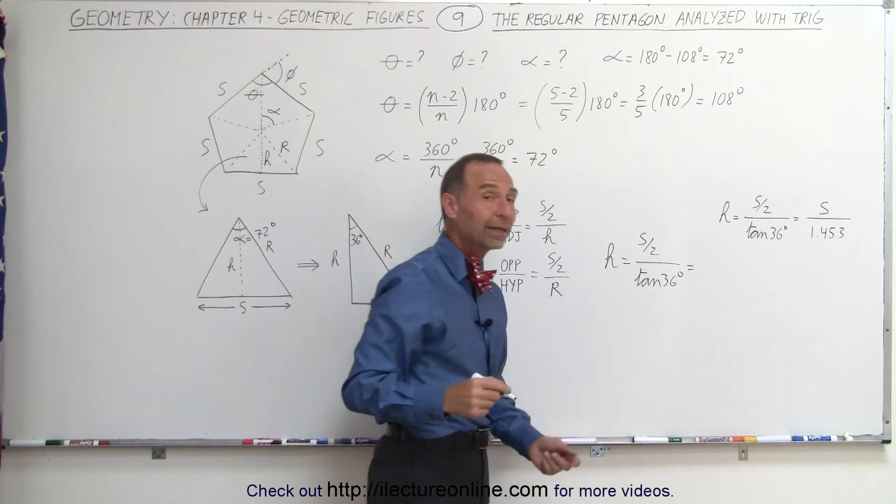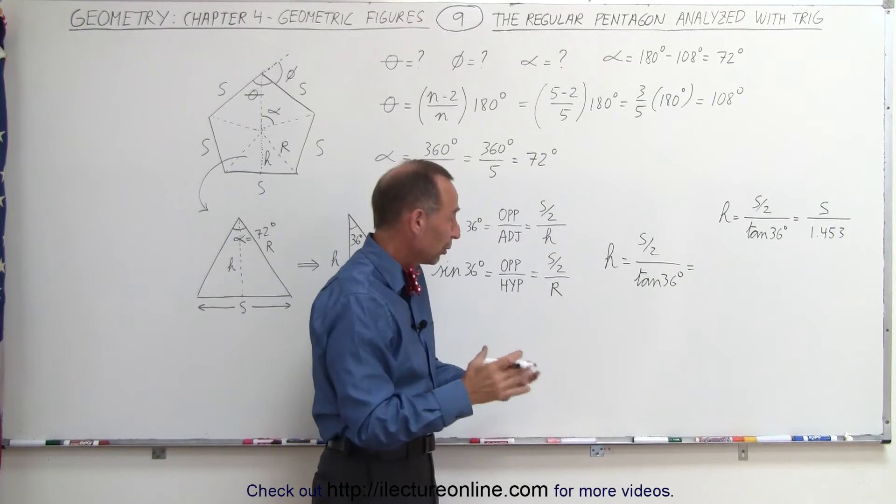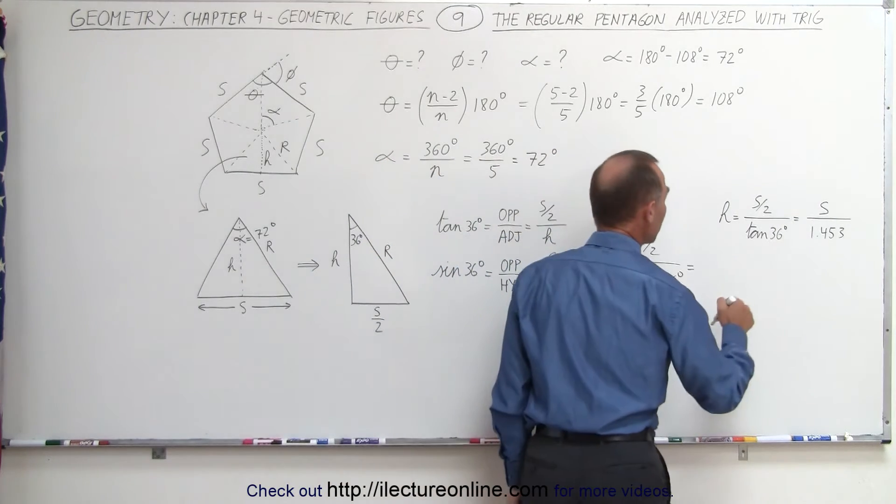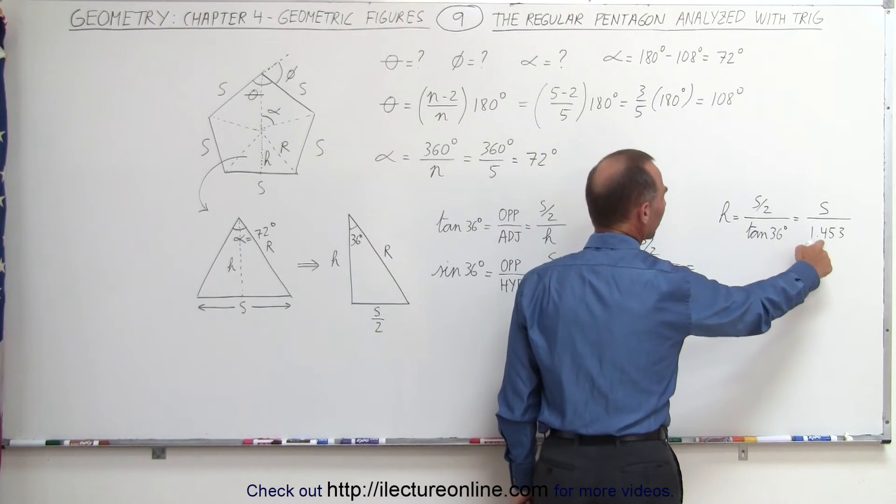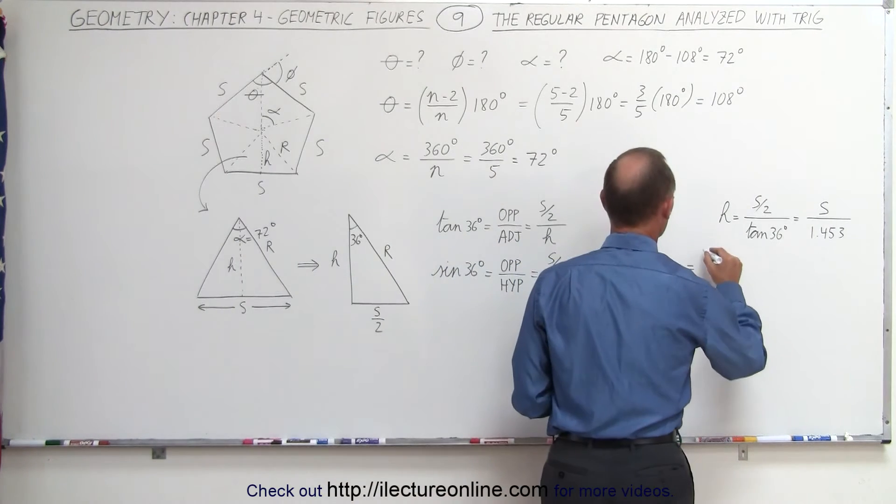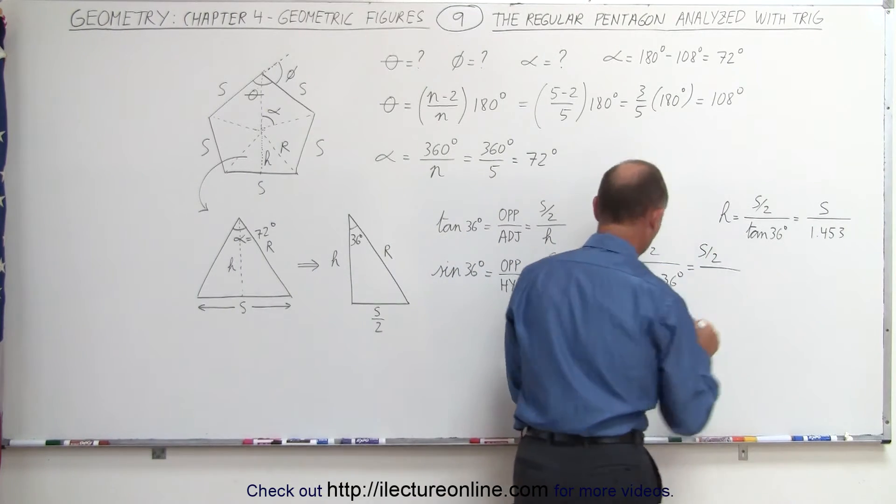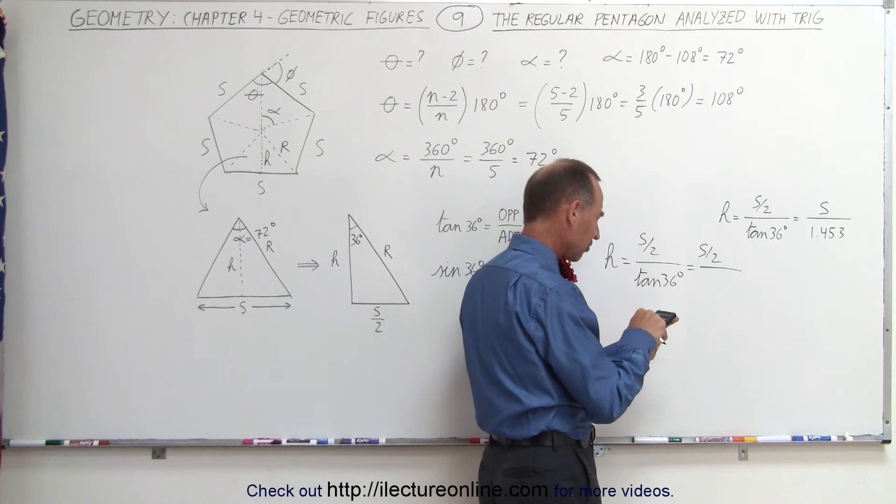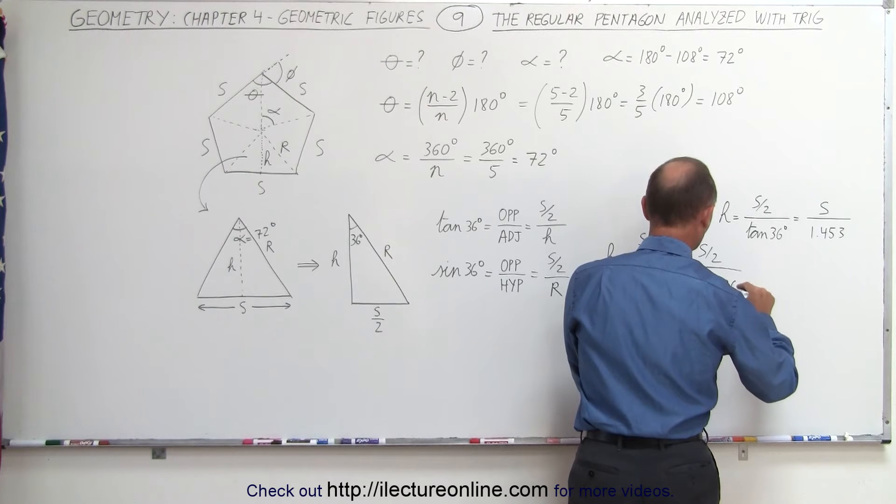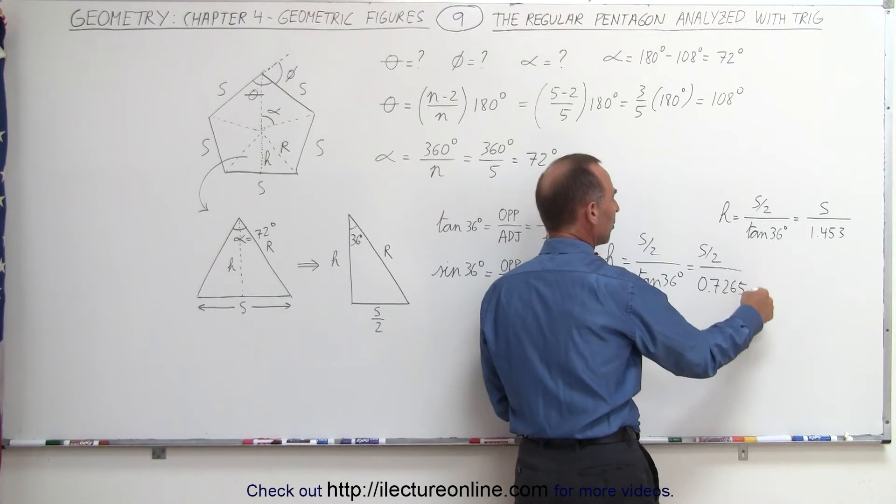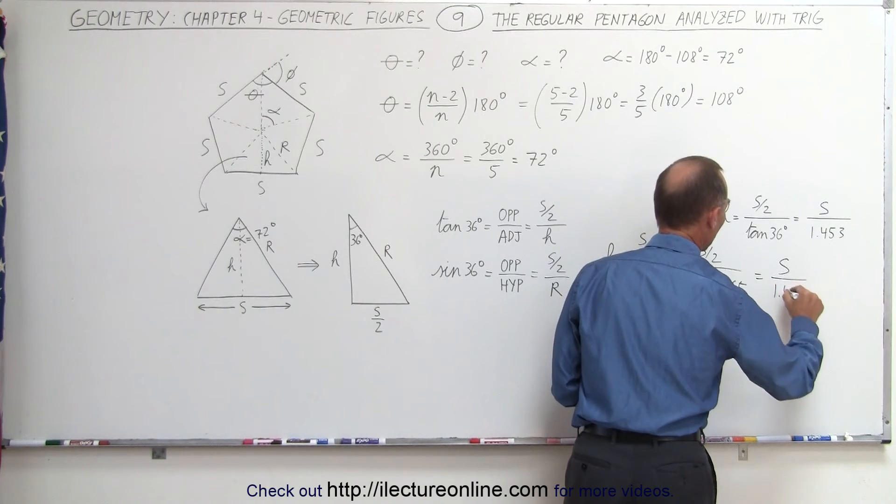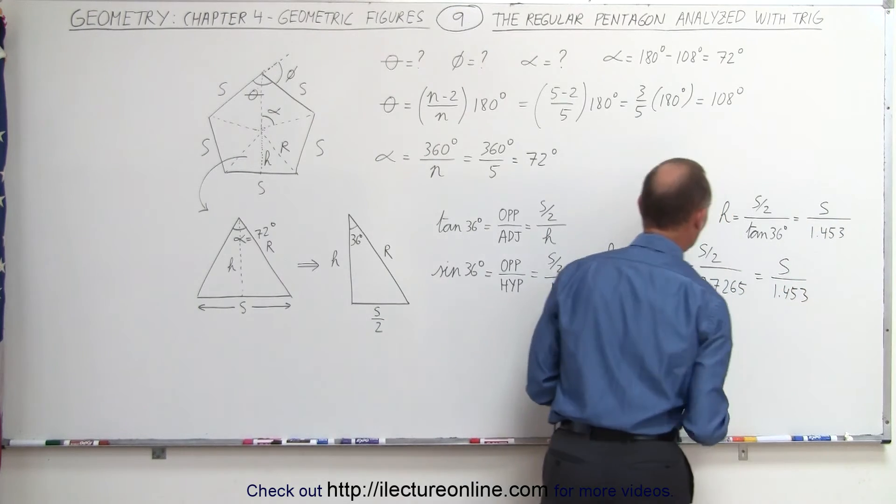When we plug that into a calculator, you may not know what to do with that, but if you simply plug that into a calculator, you take the tangent of 36 degrees, you get 0.7, well, let me do it here so you can see it. So this would be equal to s divided by 2 divided by 36, take the tangent of that, which is equal to 0.7265. Then when you bring the 2 down here, this is equal to s divided by what we had before, 1.453. That's where that comes from.